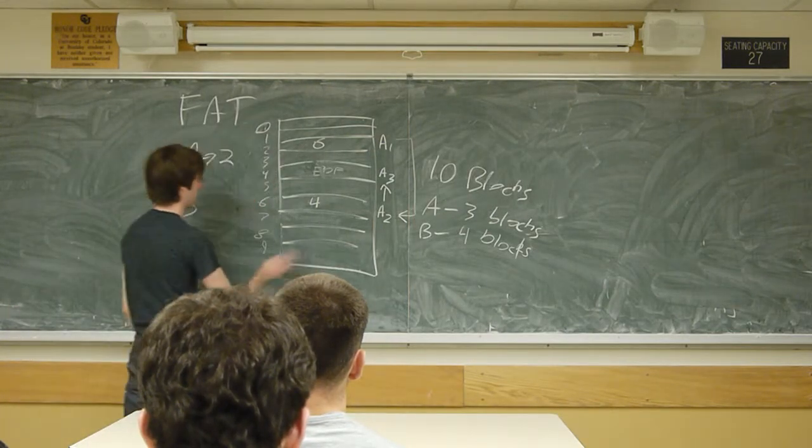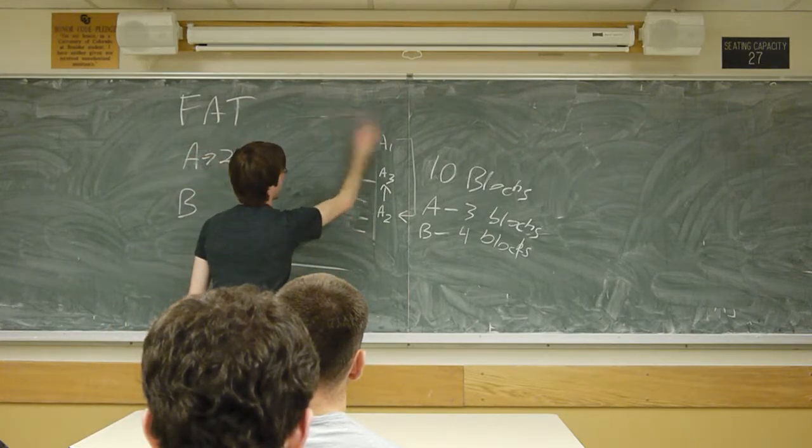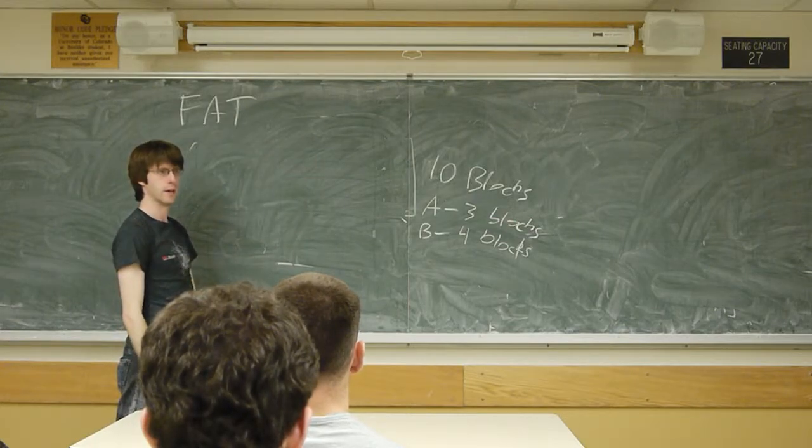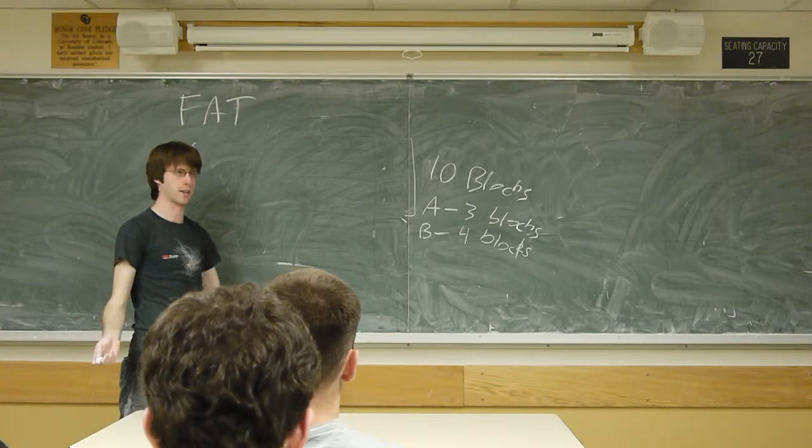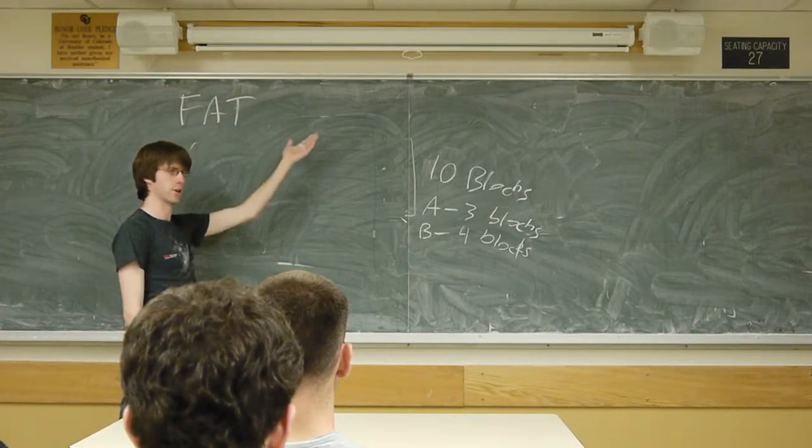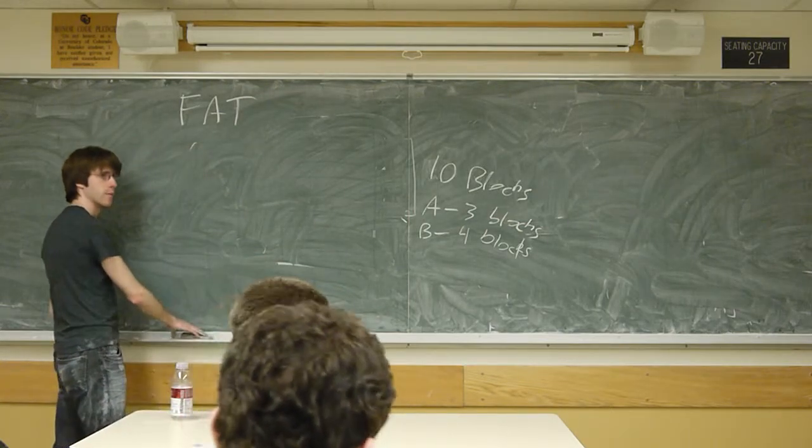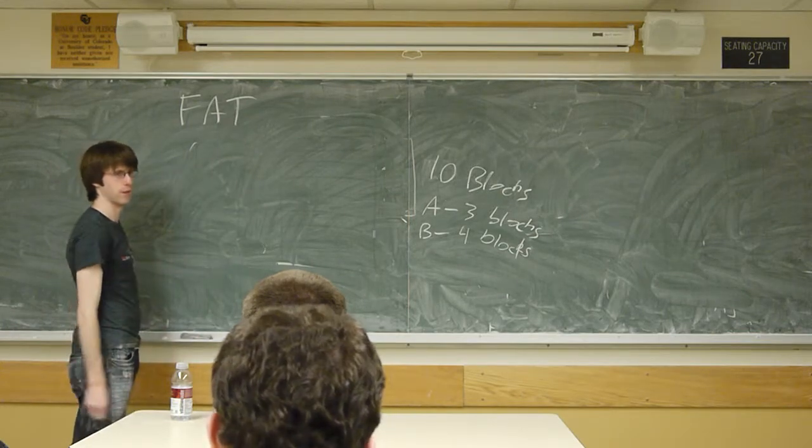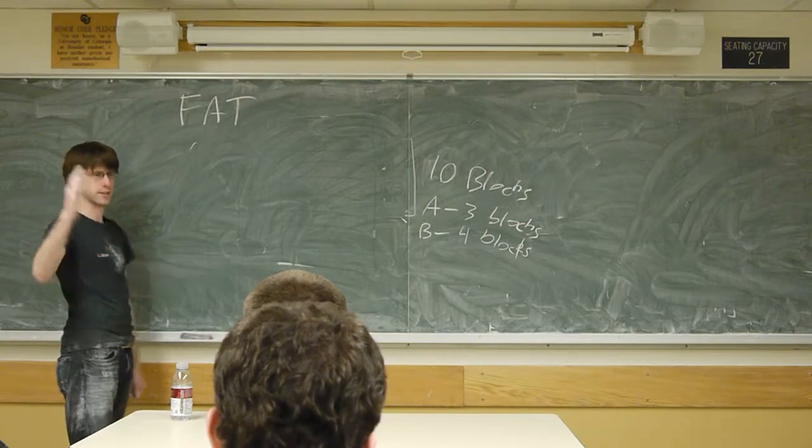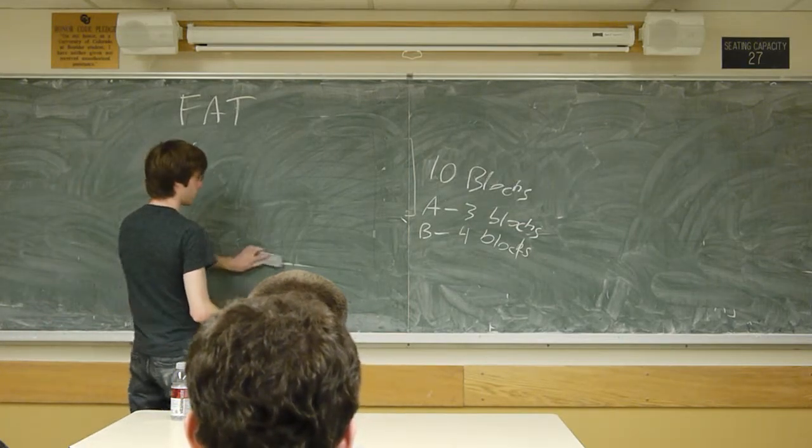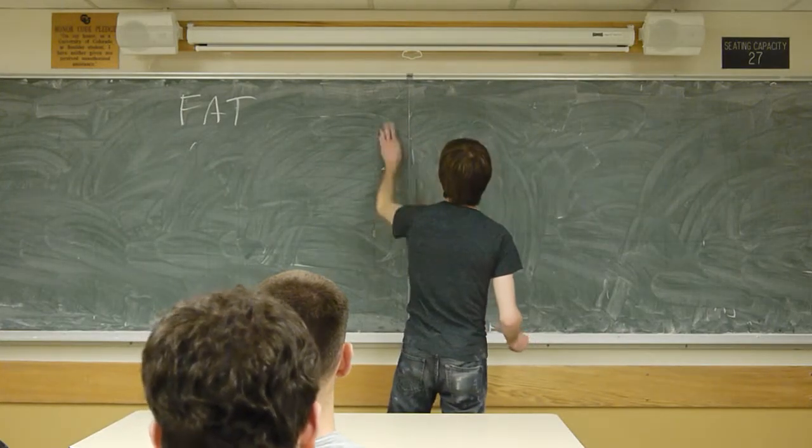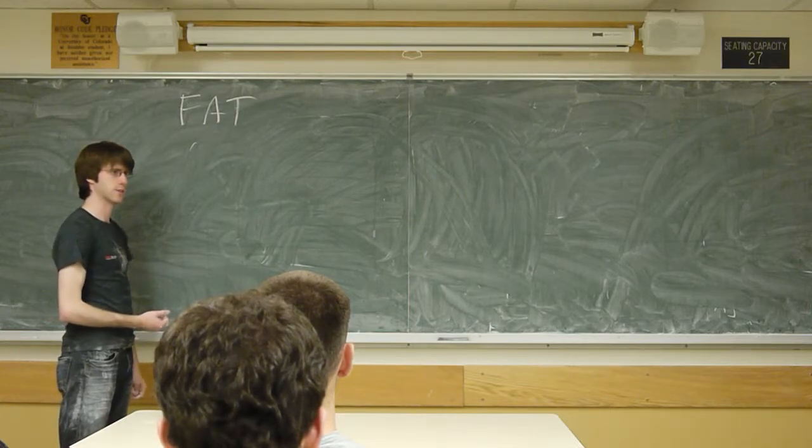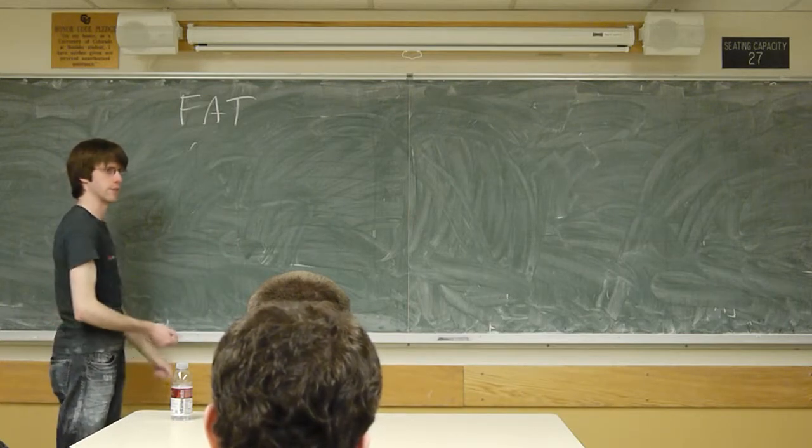So the table is essentially implementing a linked list. It's just a table-based implementation of a linked list, where each of these is basically holding a reference to the next spot in the table you need to go to. I won't do file B, but it's the same concept. You have it spread out, it would store its references, so on and so forth. Obviously, you'd have to store file B in places not already occupied by file A. So that's how file allocation table works.